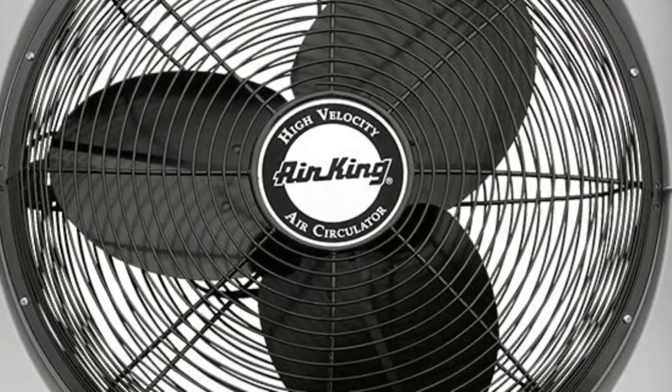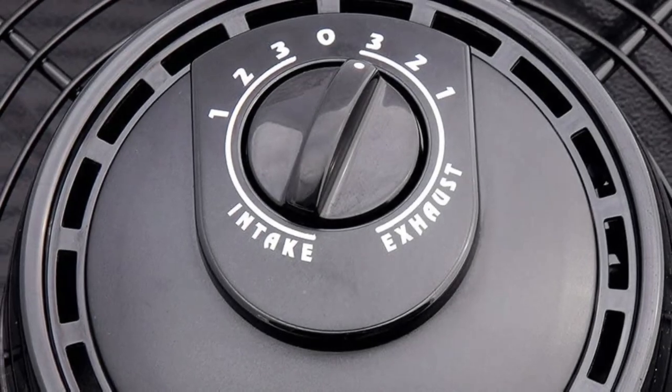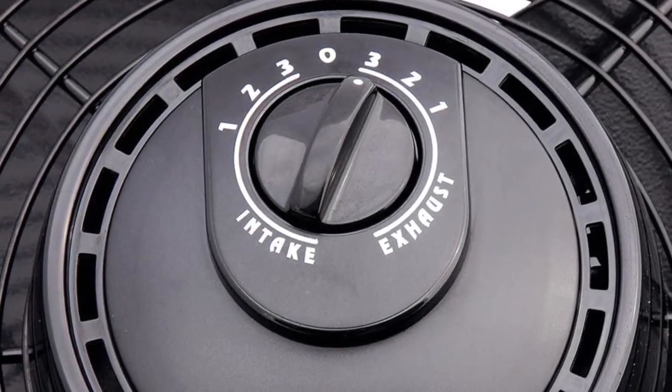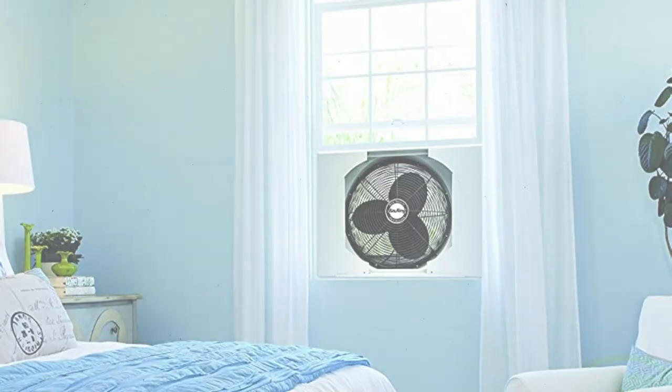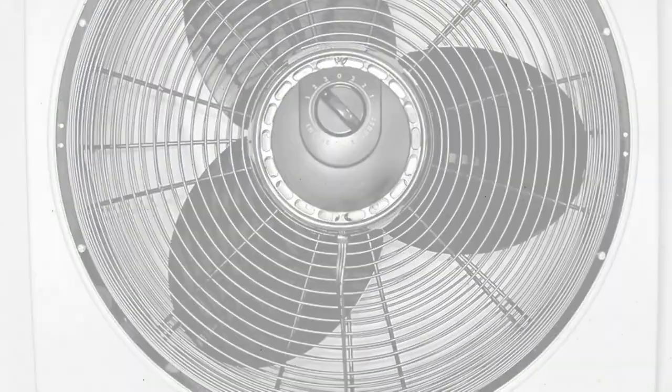The Air King also features three speed settings, drawing 1100, 1450, and 1600 CFM. One of this product's biggest selling points is its flexible installation shroud, which allows the fan to fit any window between 27 and 38 inches wide.